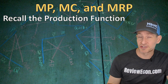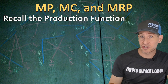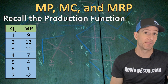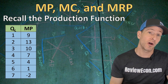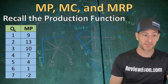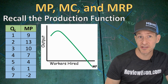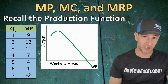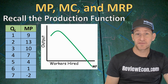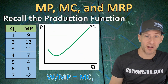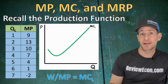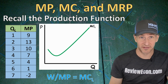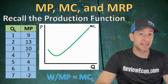When it comes to understanding labor markets, it's important to remember the production function from unit three. A production function shows us all the different quantities of labor that can be hired by a particular firm and the amount of physical product those workers can create. We have the quantity of labor in this table along with the marginal product, which is the change in total physical product with each worker hired. Thanks to the law of diminishing marginal returns, the marginal product curve increases at first due to specialization, then decreases as more workers are hired. Eventually, marginal product becomes negative due to negative returns. If we take the wage divided by the marginal product, it gives us the marginal cost of labor — a flipped upside-down version of the marginal product curve. When marginal product is rising, marginal cost is decreasing, and when marginal product is decreasing, marginal cost is rising.